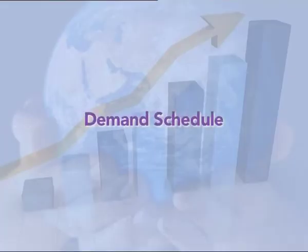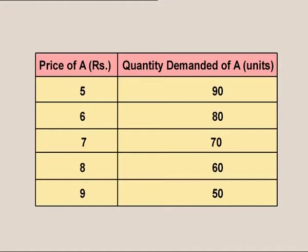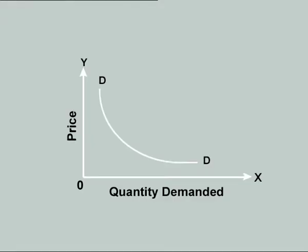Demand Schedule. A demand schedule is a table showing the list of possible product prices and corresponding quantities demanded. A hypothetical table is shown in the visual. Demand Curve. A demand curve is a graph showing the relation between quantity demanded and price when all other variables influencing demand are held constant. A demand curve is highly influenced by consumer behavior. A hypothetical demand curve is shown in the visual.